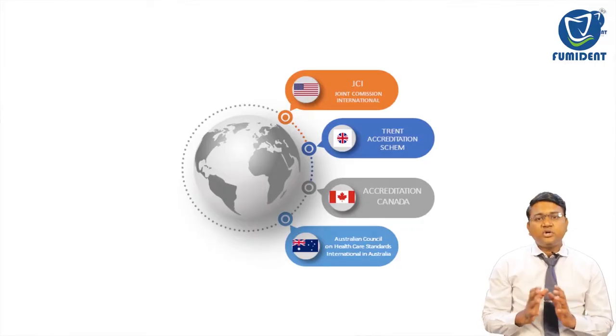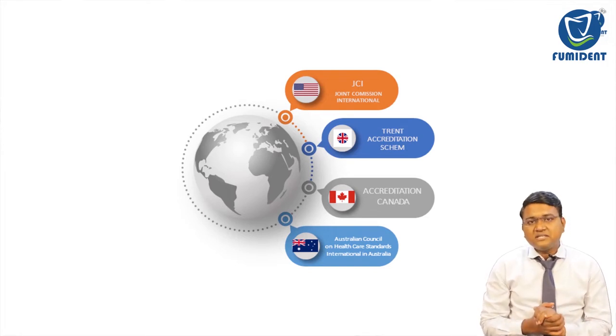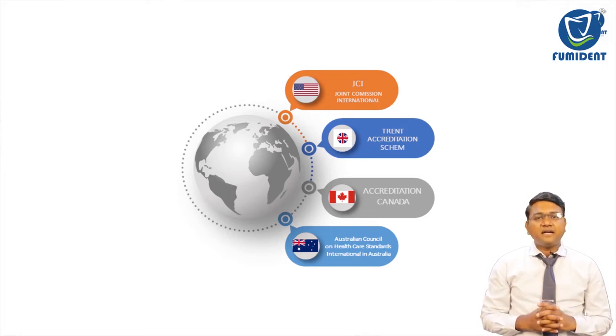How did it start? In the early 20th century in the USA, there was a concern for a good healthcare environment for clinicians. They decided on standards, implemented them, and improved their organizations, which later converted into accreditation bodies. These bodies then spread worldwide. For example, JCI — Joint Commission International — is a US-based accreditation system. In the UK there is TRENT accreditation, in Canada there is Accreditation Canada, and in Australia there is the Australian Council on Healthcare Standards International.